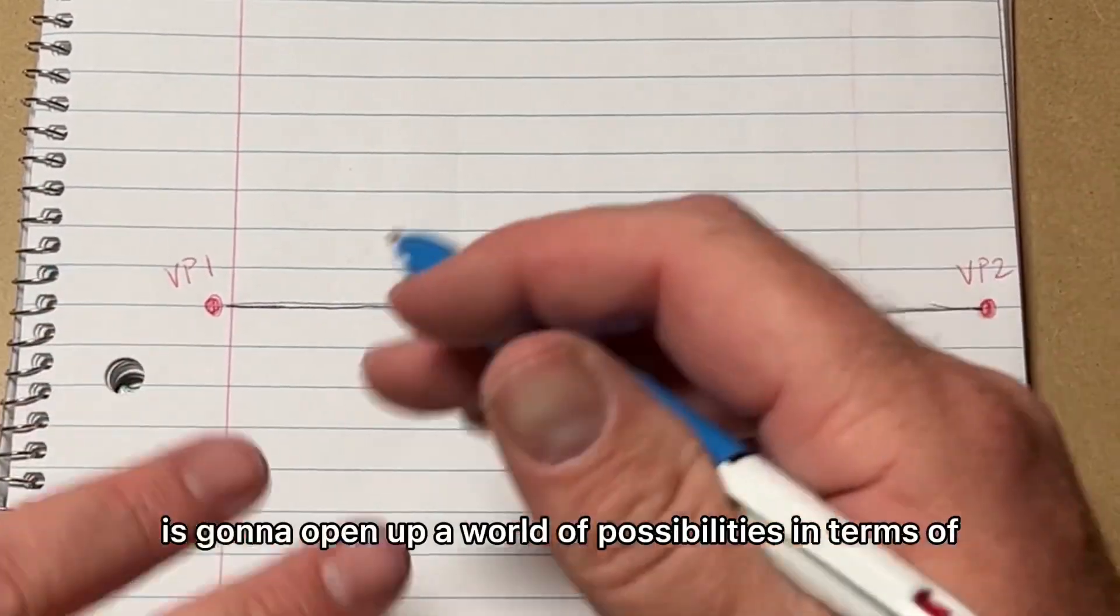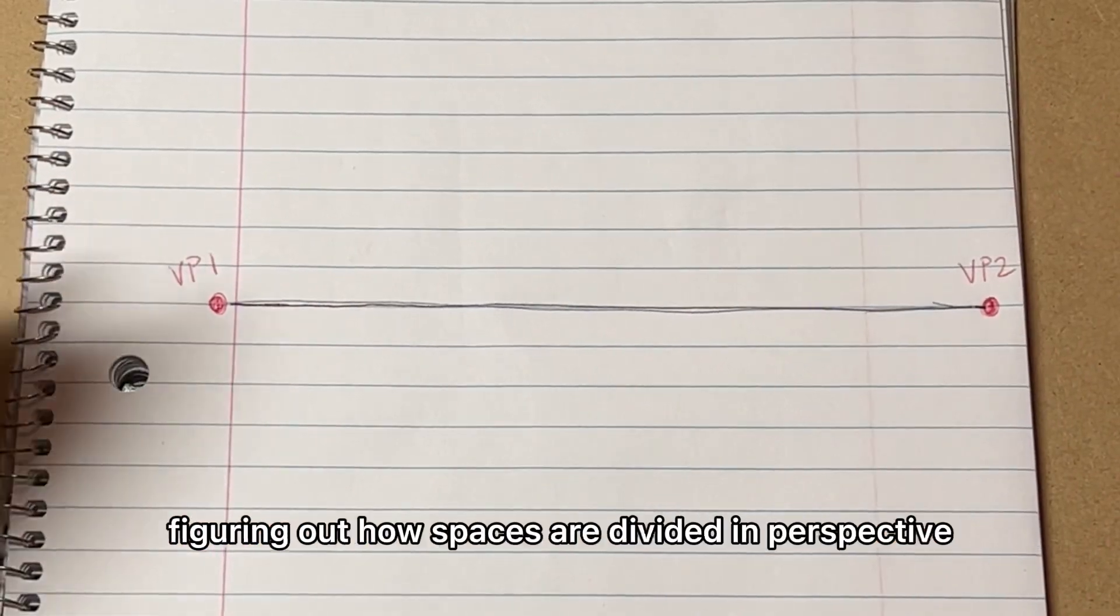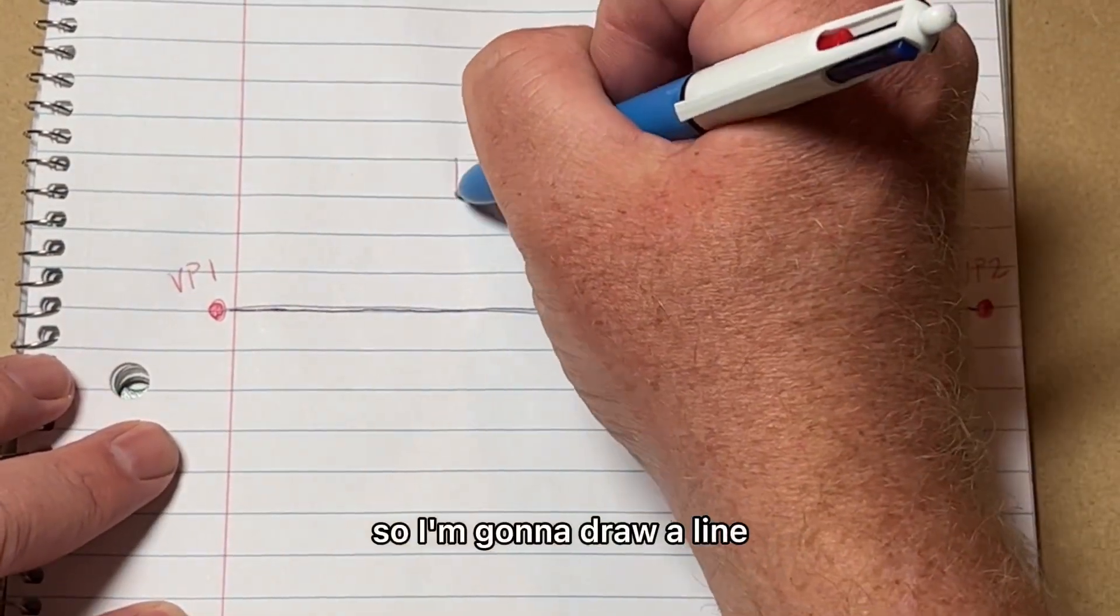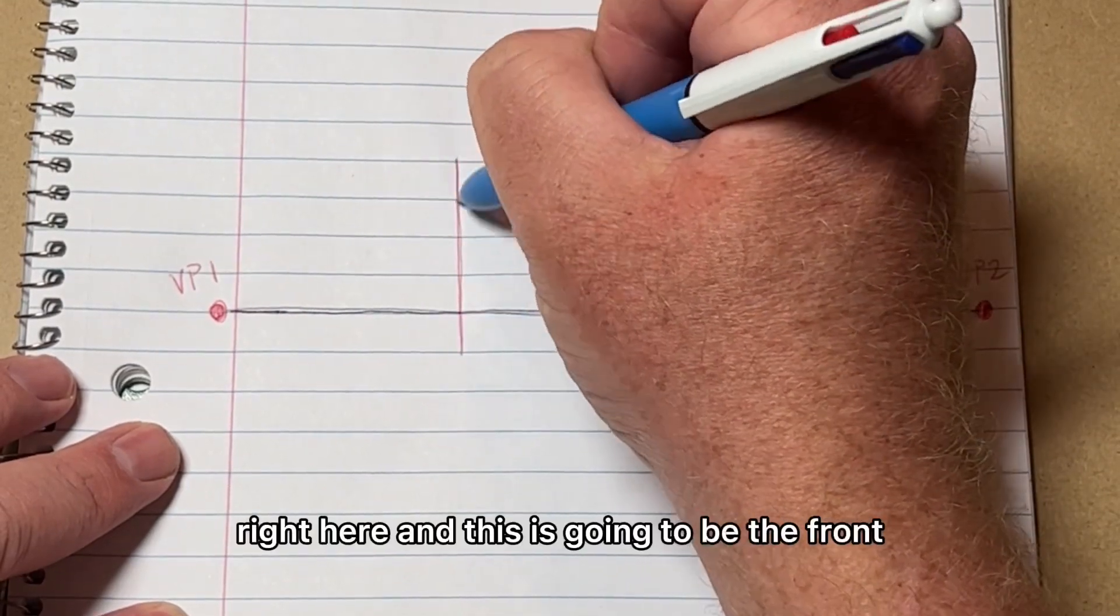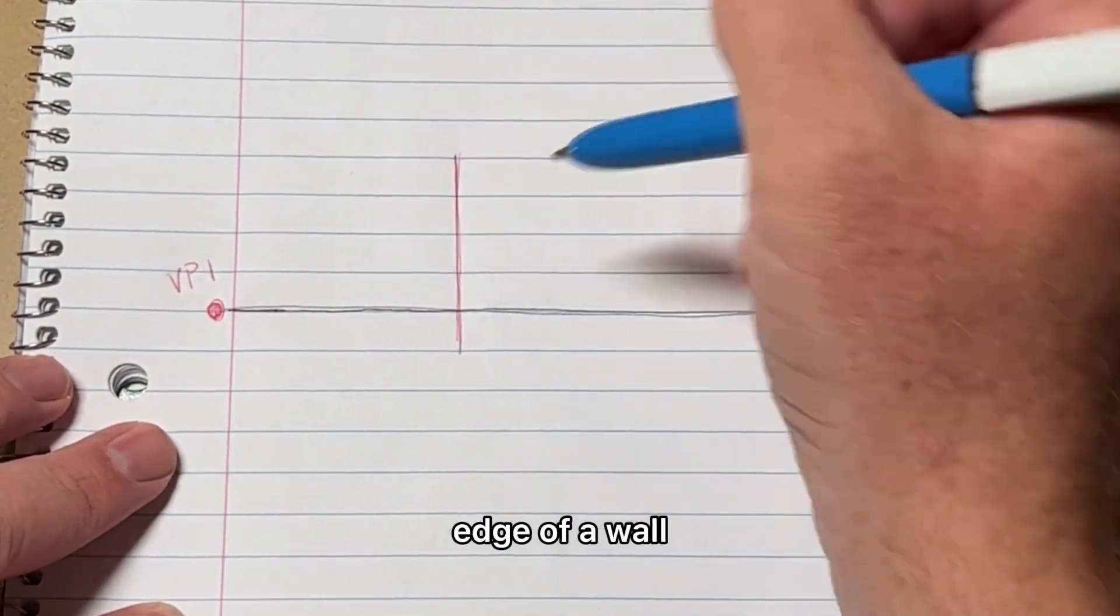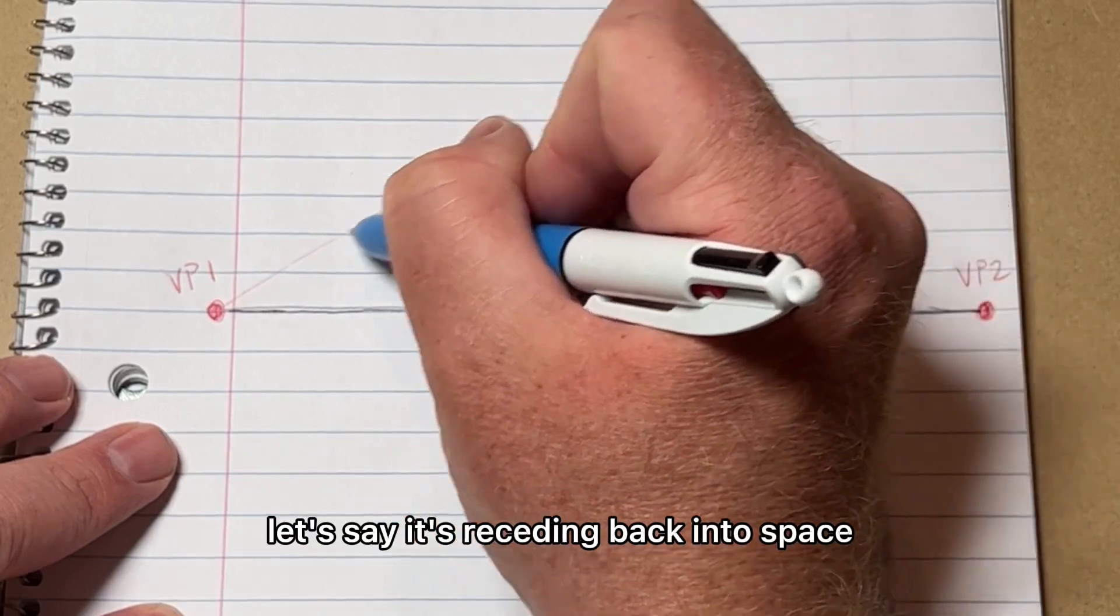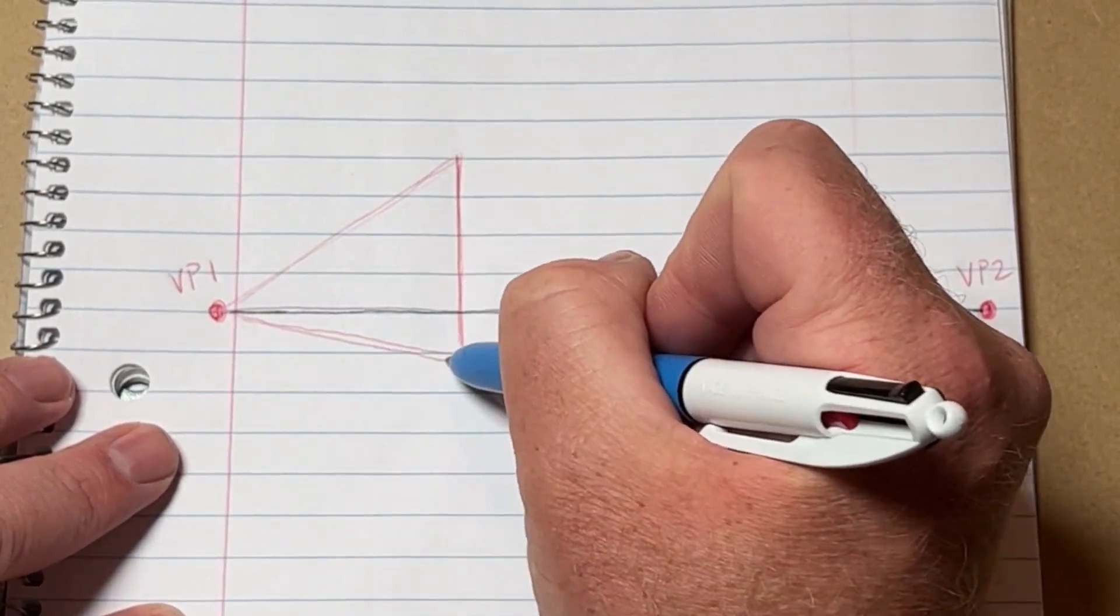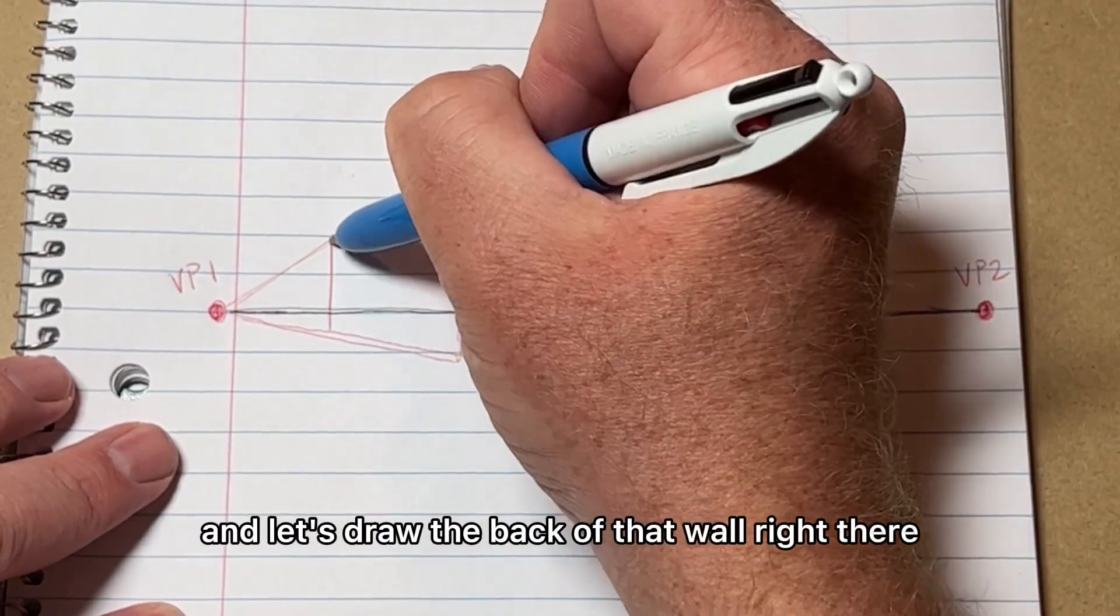This Magic X trick is going to open up a world of possibilities for figuring out how spaces are divided in perspective. I'm going to draw a line right here, and this is going to be the front edge of a wall. Now that wall, let's say it's receding back into space towards this vanishing point on the left. And let's draw the back of that wall right there.